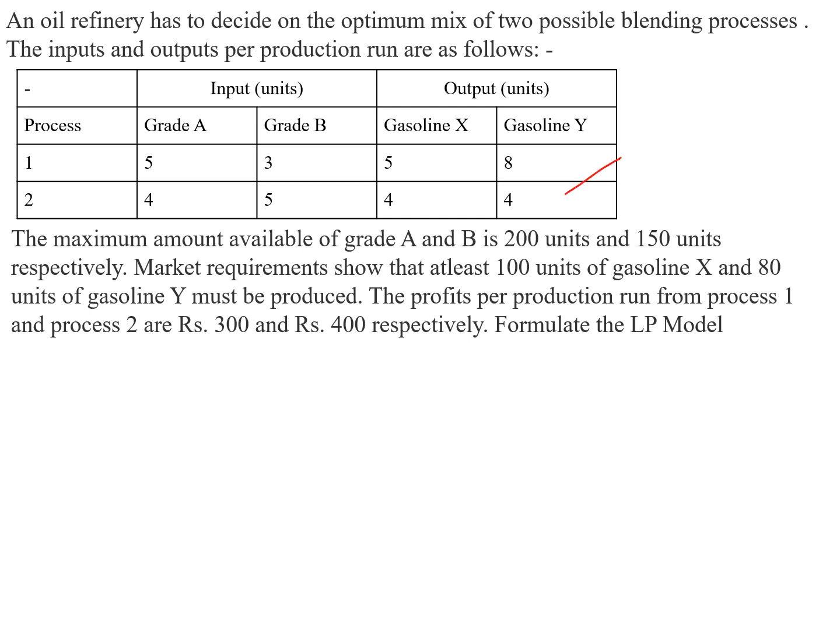The maximum amount available of grade A and grade B is 200 units and 150 units respectively. Market requirements show that at least 100 units of gasoline X and 80 units of gasoline Y must be produced. The profits per production run from process 1 and process 2 are rupees 300 and rupees 400 respectively. Formulate the LP model.